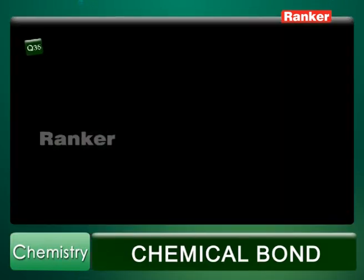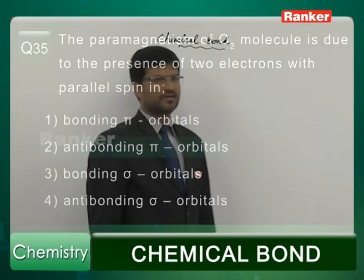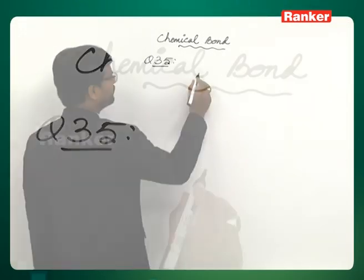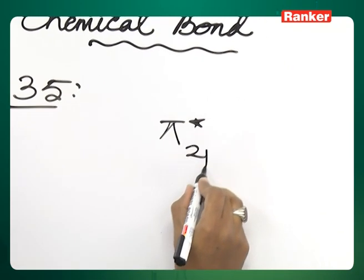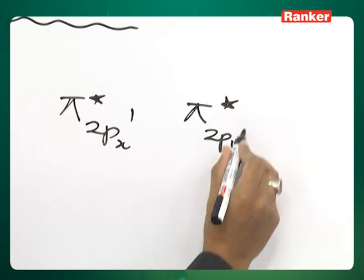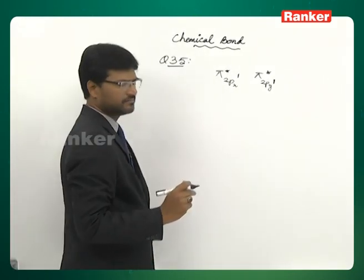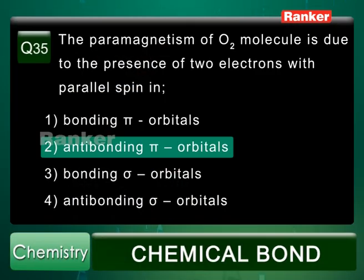Question number 35: The paramagnetism of O2 is due to the presence of two electrons with parallel spin in which orbitals? The correct answer is anti-bonding pi orbitals. The last two electrons of oxygen go into π* 2px and π* 2py. These unpaired electrons are responsible for the paramagnetic nature of oxygen. Answer is the second option.